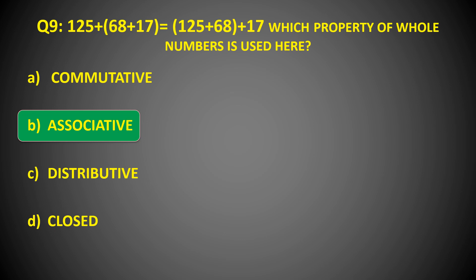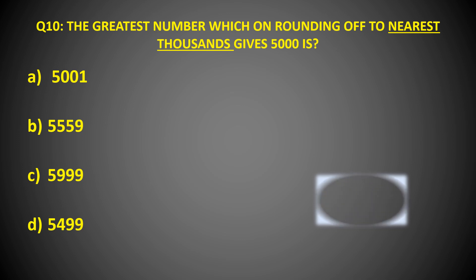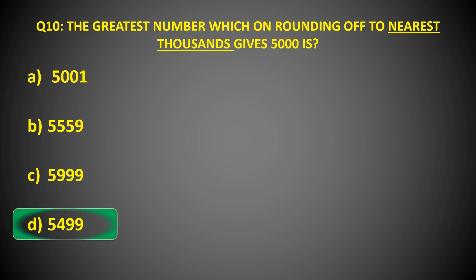Moving ahead: The greatest number which on rounding off to nearest thousands gives the answer 5,000 is? Time's up. The correct answer is Option B: 5,499. This is the greatest number which when rounded off to the nearest thousands will give the answer 5,000.